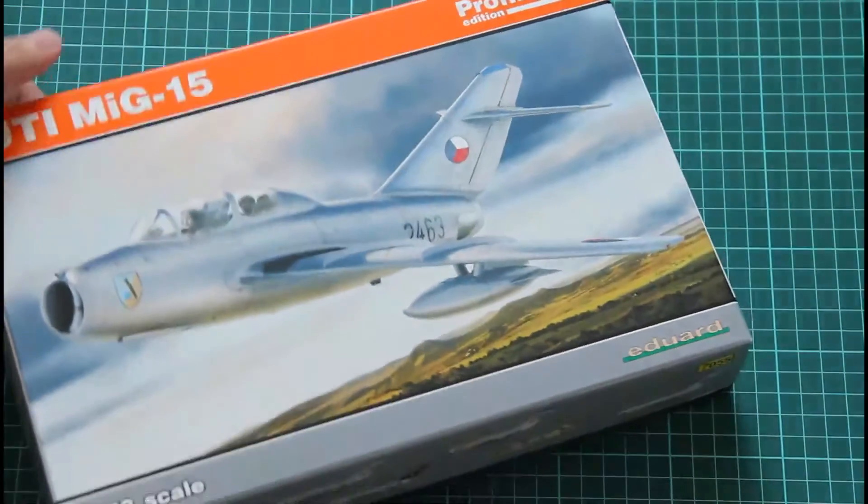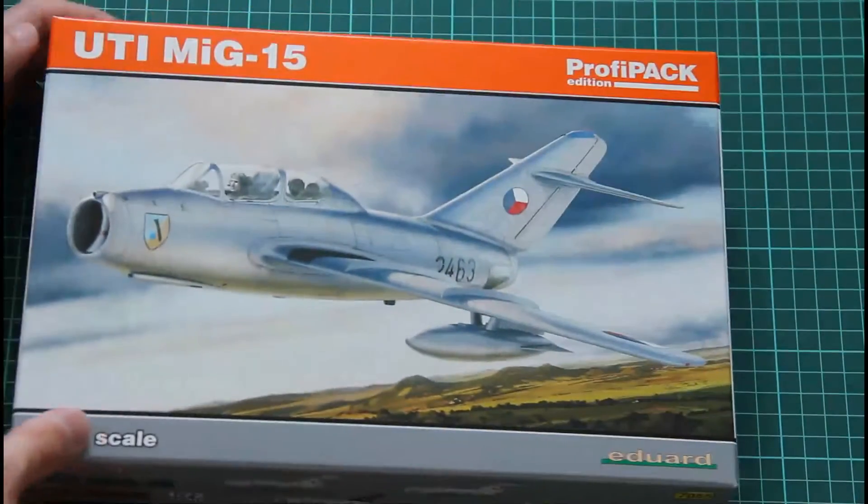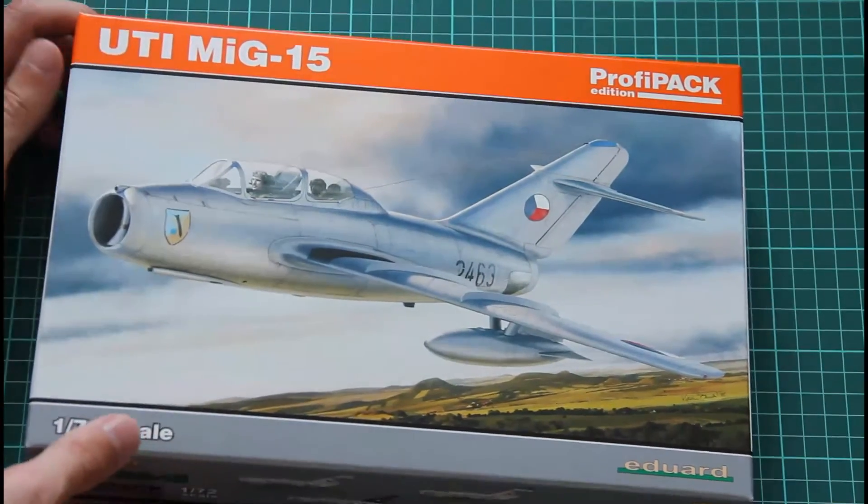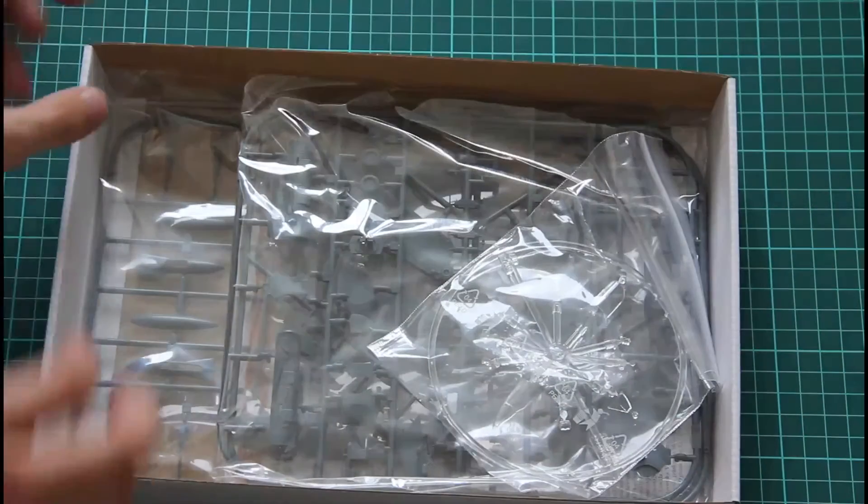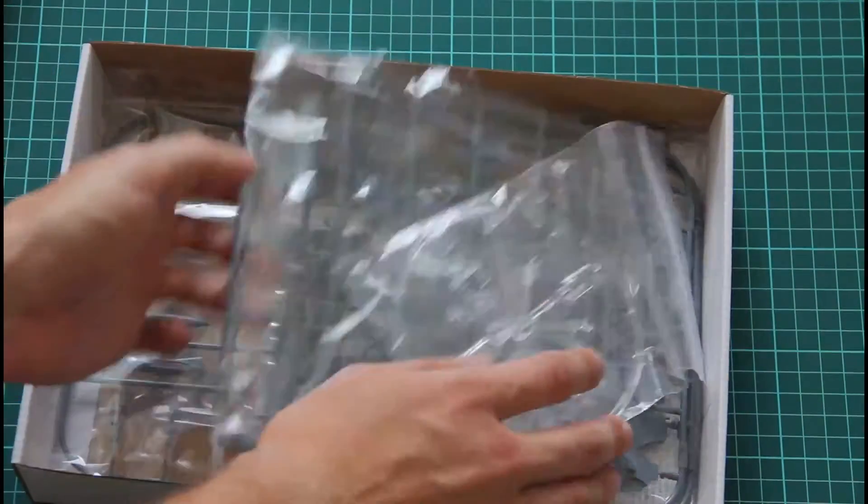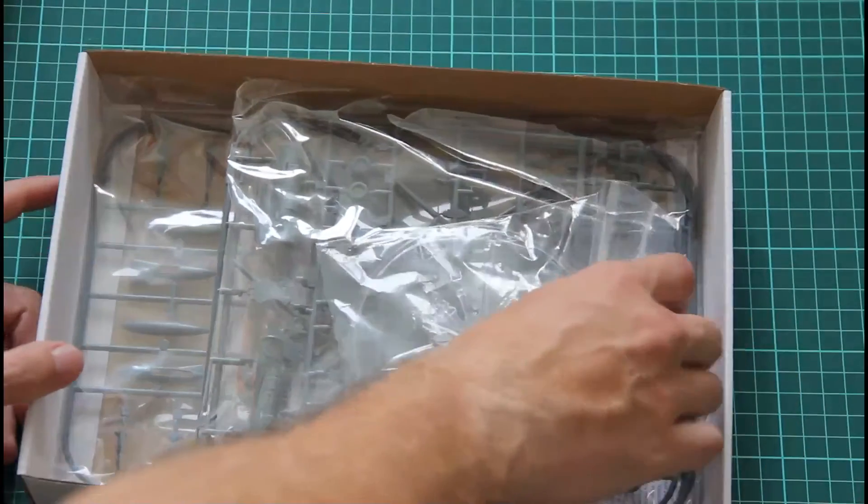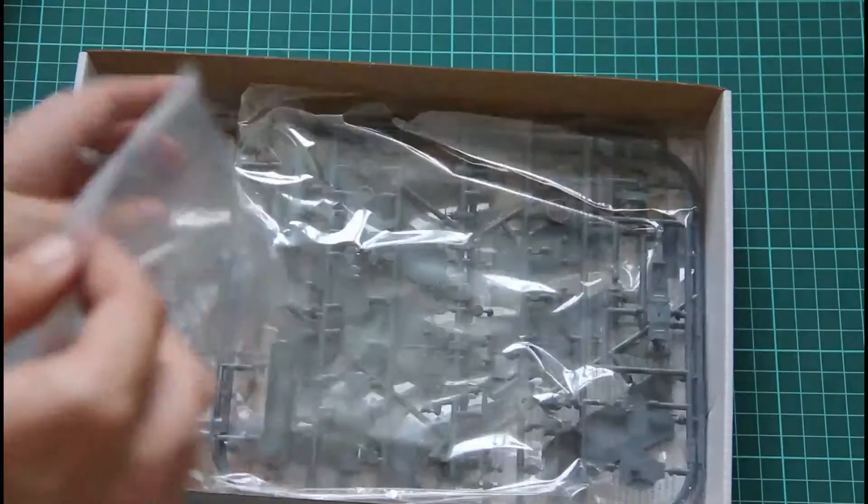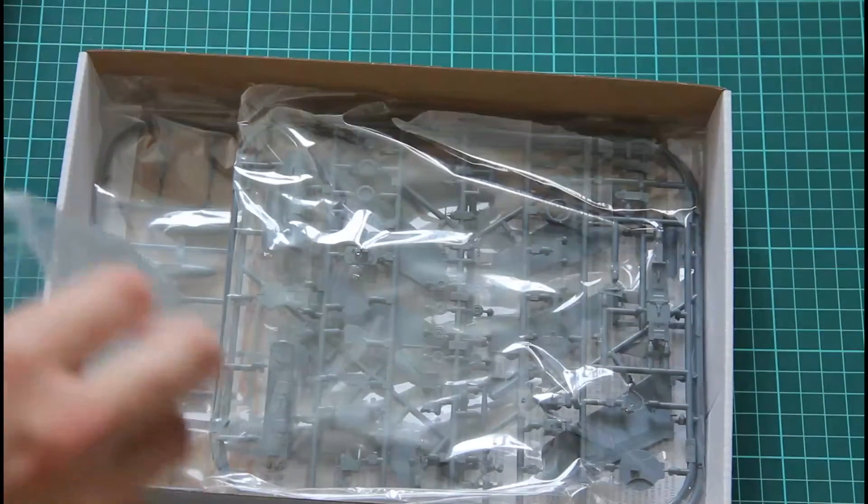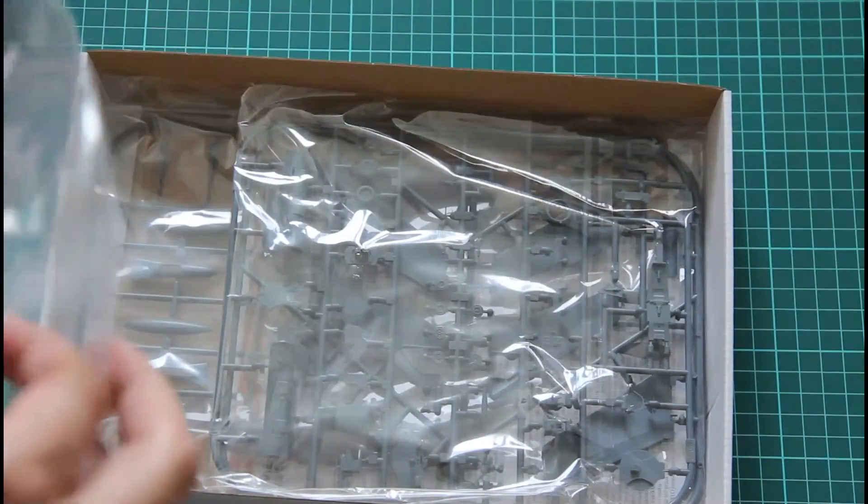And of course as a ProfiPak inside you can expect PE parts, masks and some other extra goodies. So this is top opening box, quite sturdy as you can see, so everything arrived intact and we have three grey plastic sprues and one transparent so let's check them one by one.